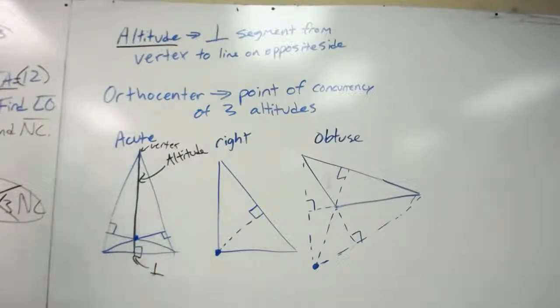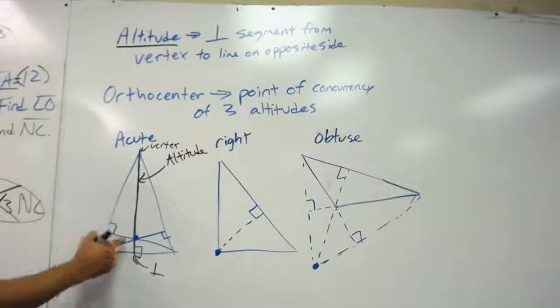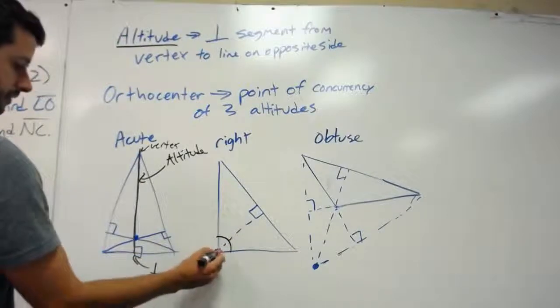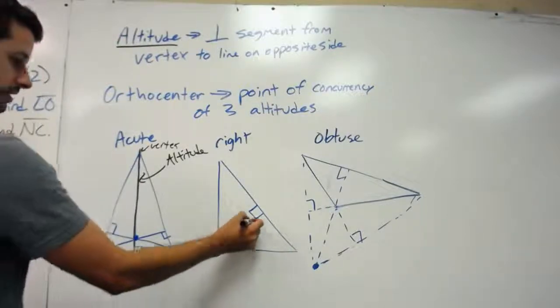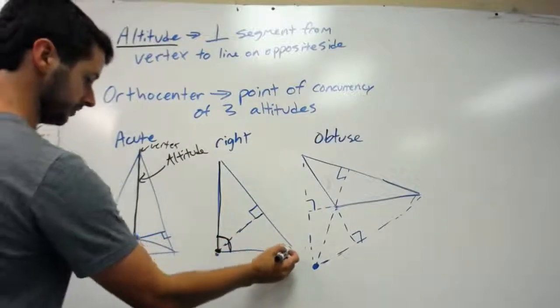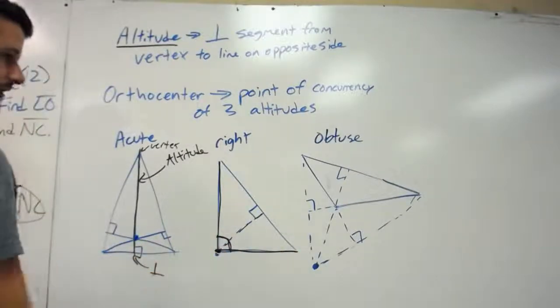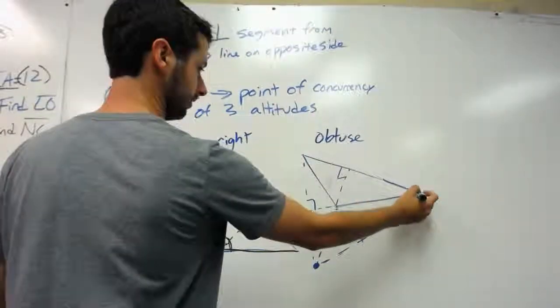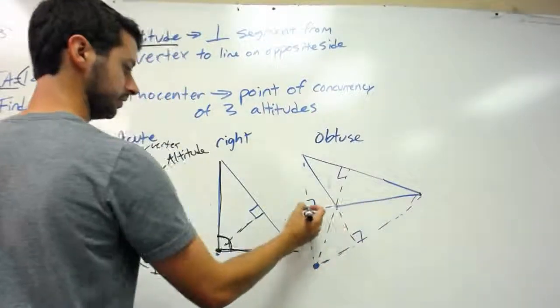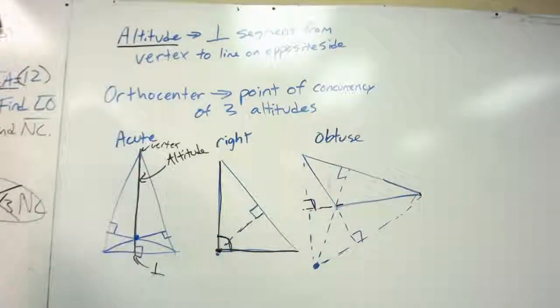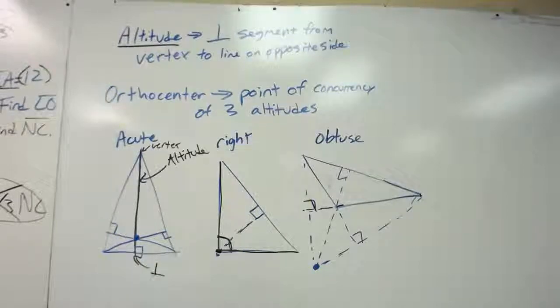So that's an example of an altitude, and you can see the other altitudes. Notice in this triangle, it's a right triangle. So yes, this is an altitude, but also the legs are actually altitudes. Interestingly enough, on an obtuse triangle, you would have to draw them outside. So if I went from a vertex to a spot outside, I'd have to draw the line exterior to the triangle. But those are altitudes.